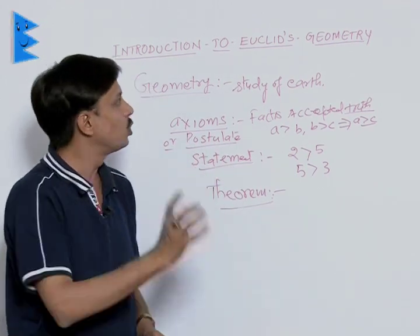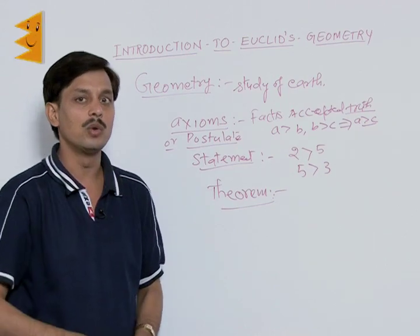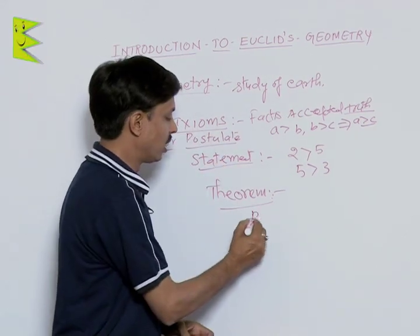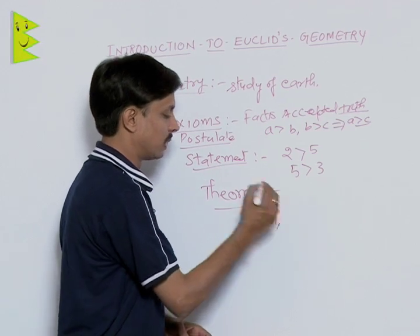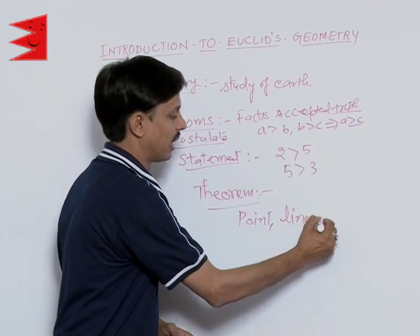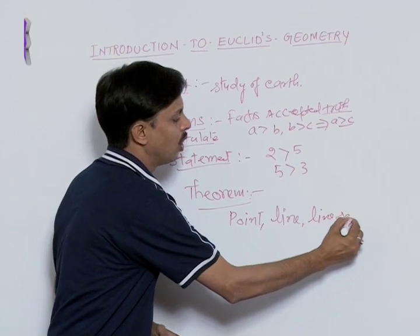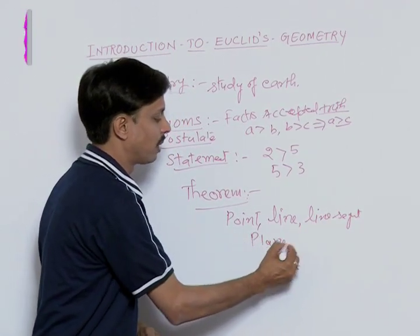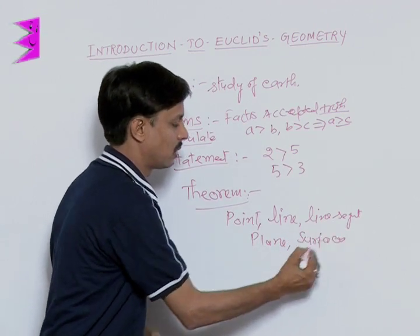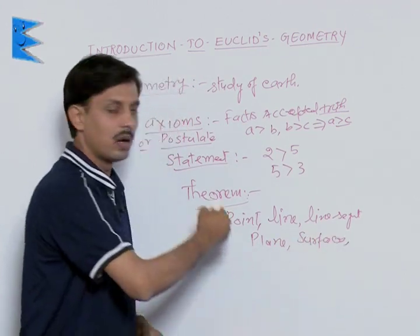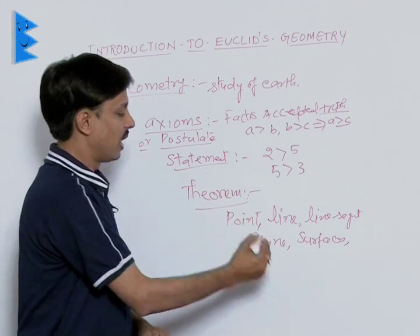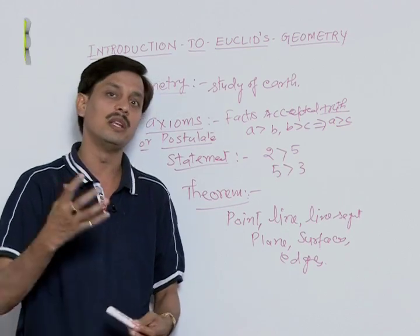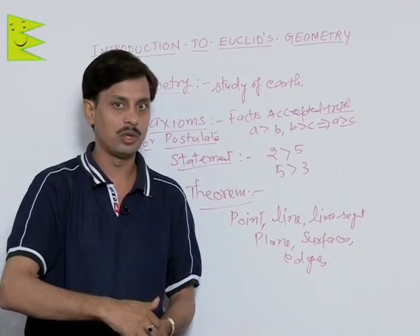In Euclid's geometry, what do we need to study? We need to study about the point, the line, the line segment, the plane, the surface, surfaces, planes, and edges. These are some of the things at the level of class 9 that will be discussed in our topic of geometry.